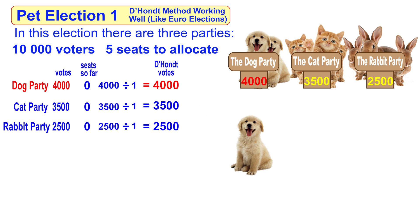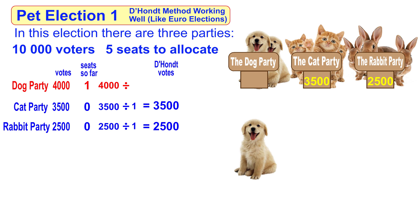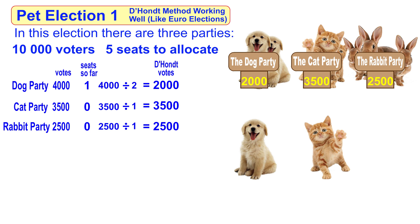The dog party has the biggest votes, so a dog is elected. Now the dog has one seat, so we add one onto the one giving us 2. So we've got 4,000 divided by two, leaving the dog with 2,000 votes. Now the cat party has the largest amount of votes, so a cat is elected. The cat now has one seat — one plus one gives us 2 — so 3,500 divided by two gives 1,750 votes.